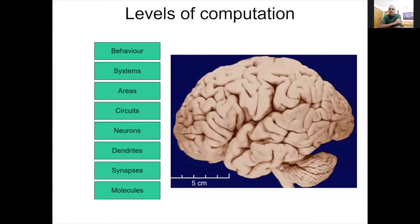This is a very familiar slide to many of you, which is that the brain works and computes at many levels starting from molecules up to synapses, dendrites, neurons, circuits, areas, systems, and behavior. We'll be looking primarily at the lower end of this scale.